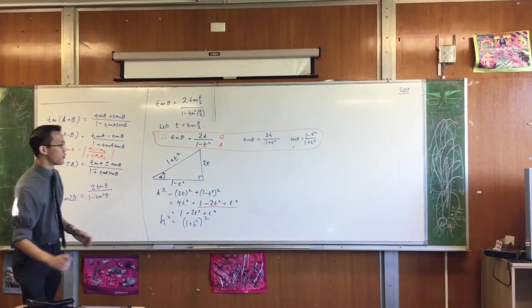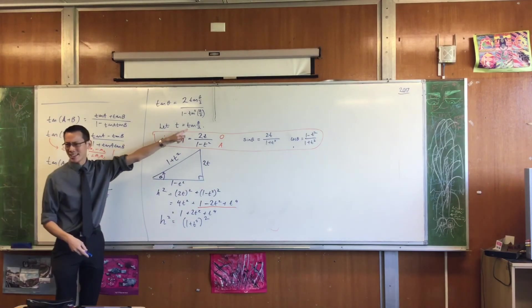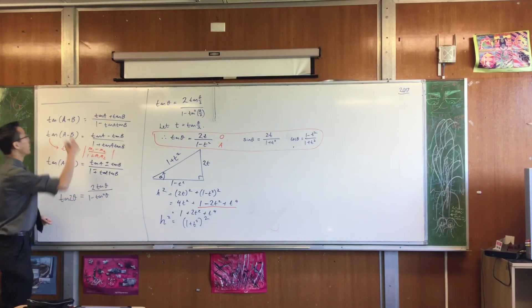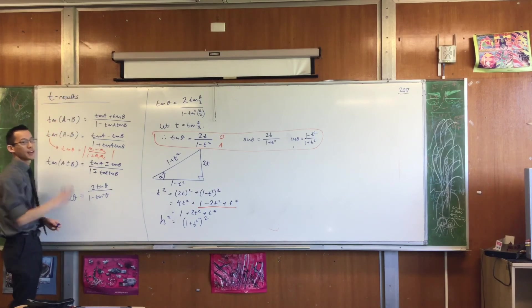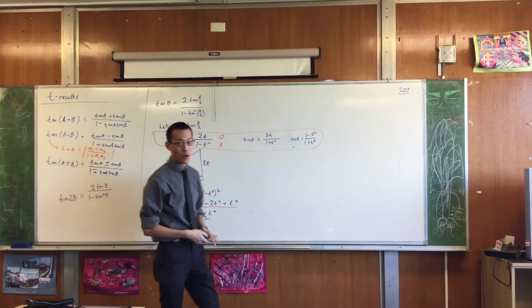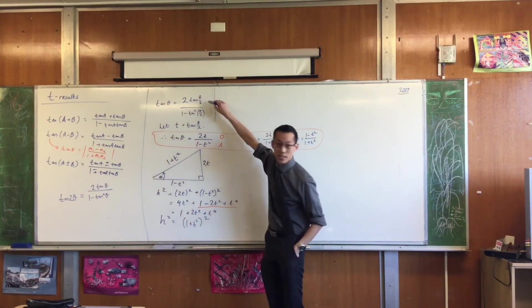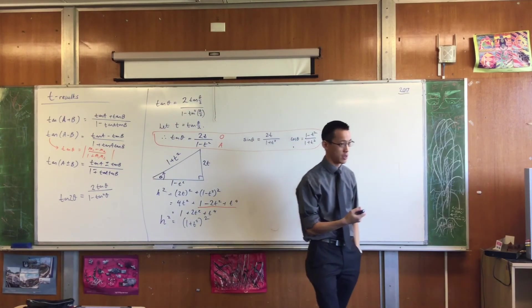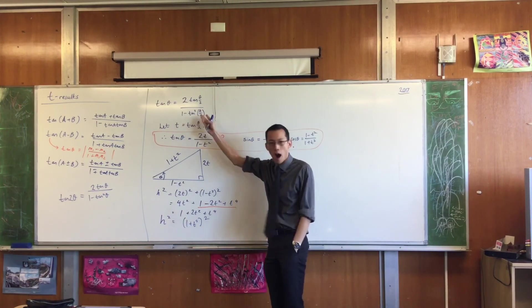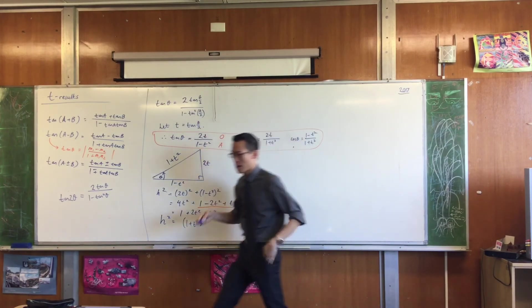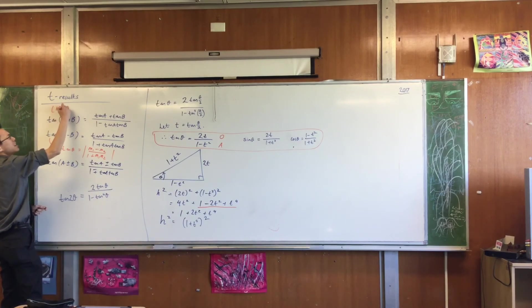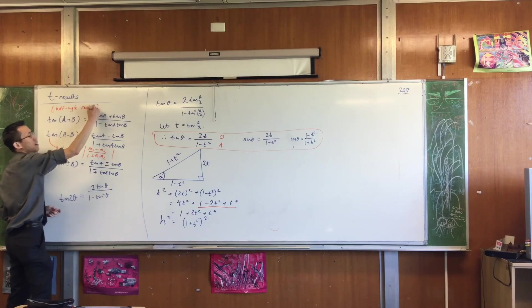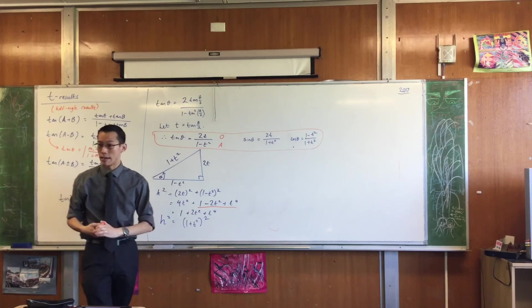These results, because they all are in terms of this weird T thing that we call them, we call them the T results. They are also often called, for this exact reason up here, the half angle results. Because that's what the T's stand for. Tan of half your angle. So sometimes, particularly the older textbooks, we'll often call them not T results, but the half angle results or half angle identities.